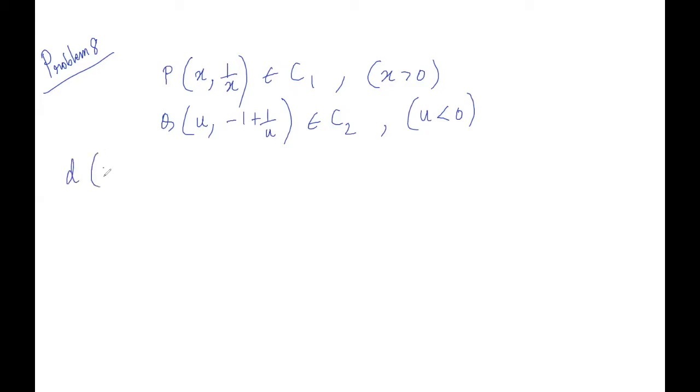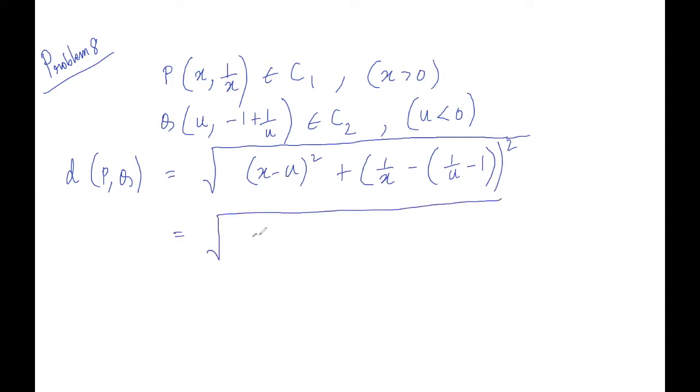Now what is the distance between P and Q? So that is nothing but the square root of (x minus u) squared plus (1/x minus 1/u minus 1) squared. Now let's write this as x. Now I will take my negative u as t, and t is strictly greater than 0. So I'm replacing negative u by plus t.